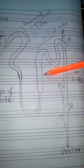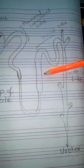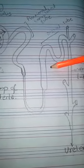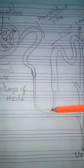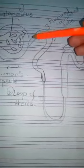In the loop of Henley, all the useful substances in our body are reabsorbed which were accidentally transferred from here into the Bowman's capsule. They are reabsorbed from the glomerular filtrate coming into the loop of Henley and into